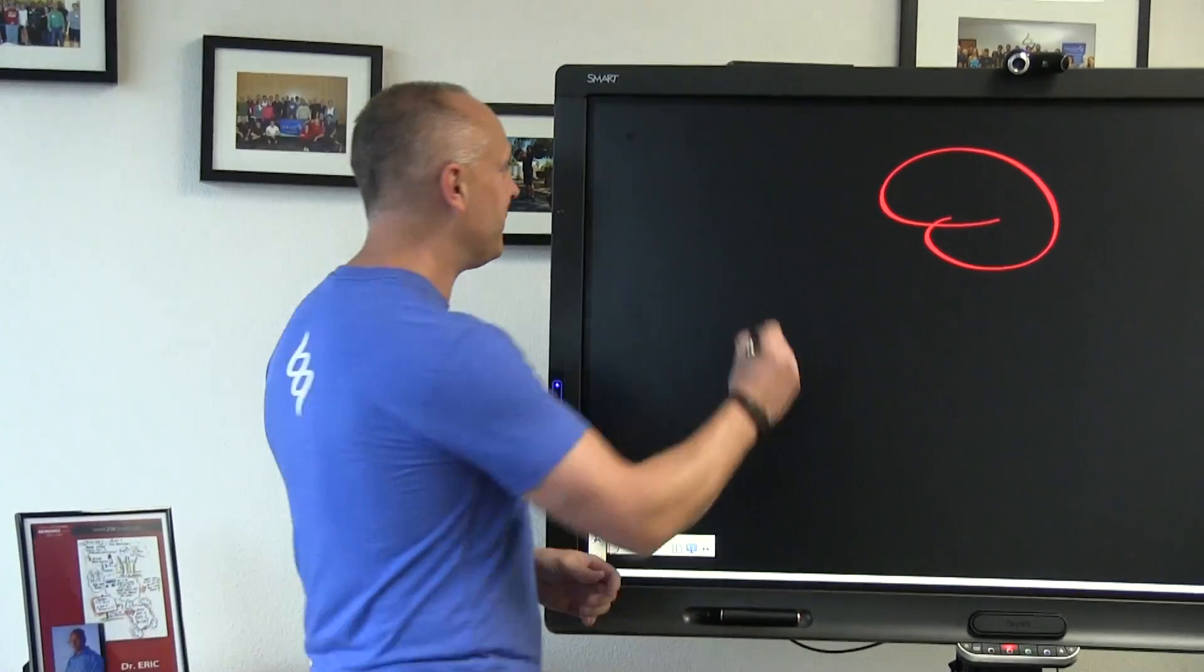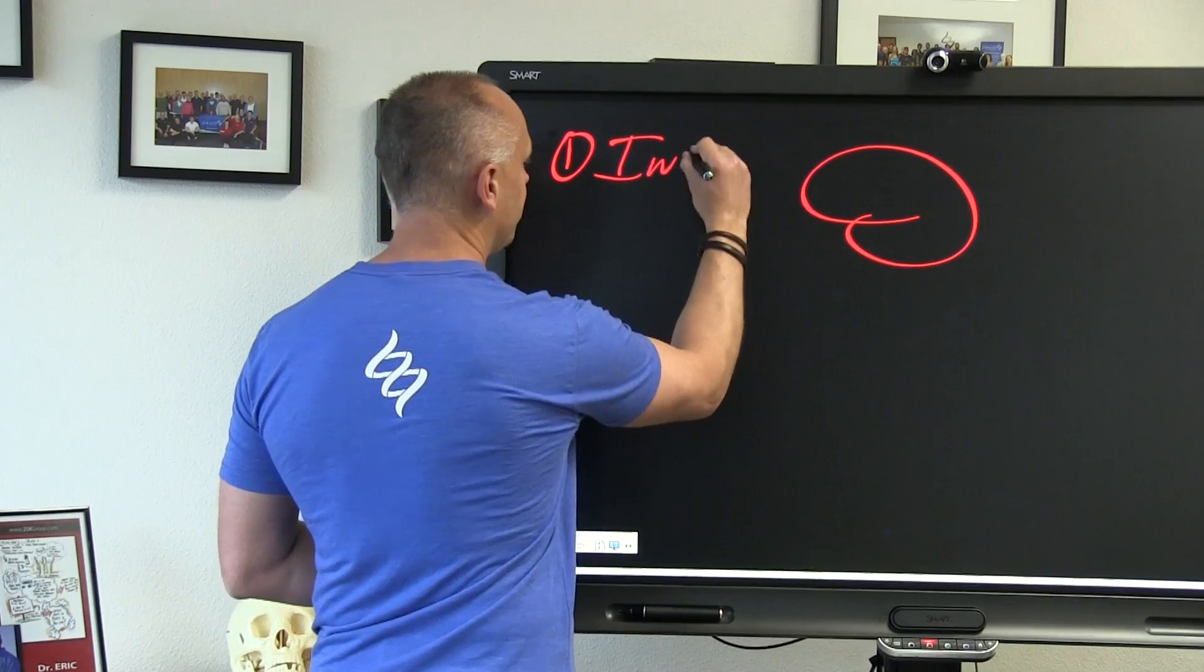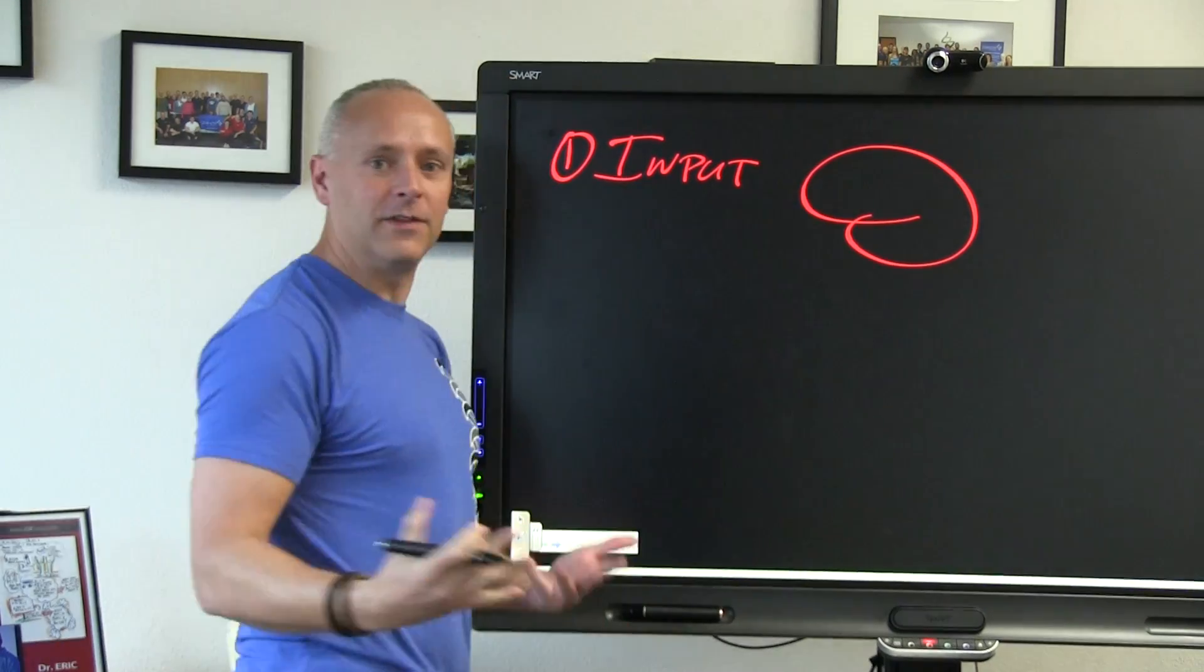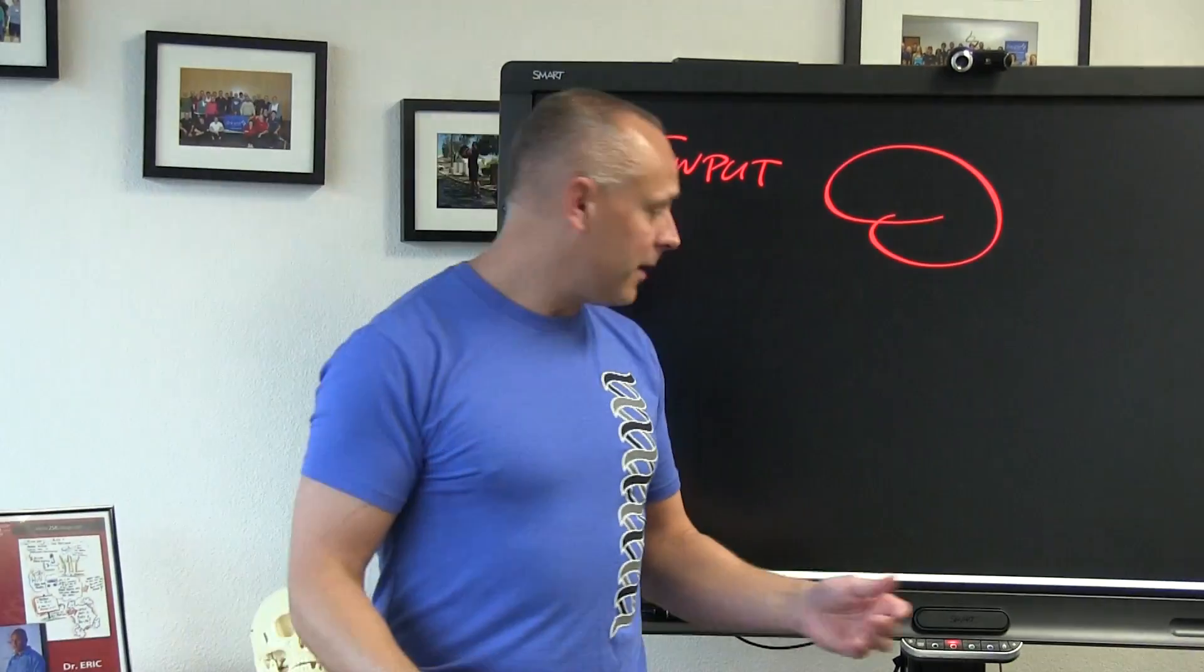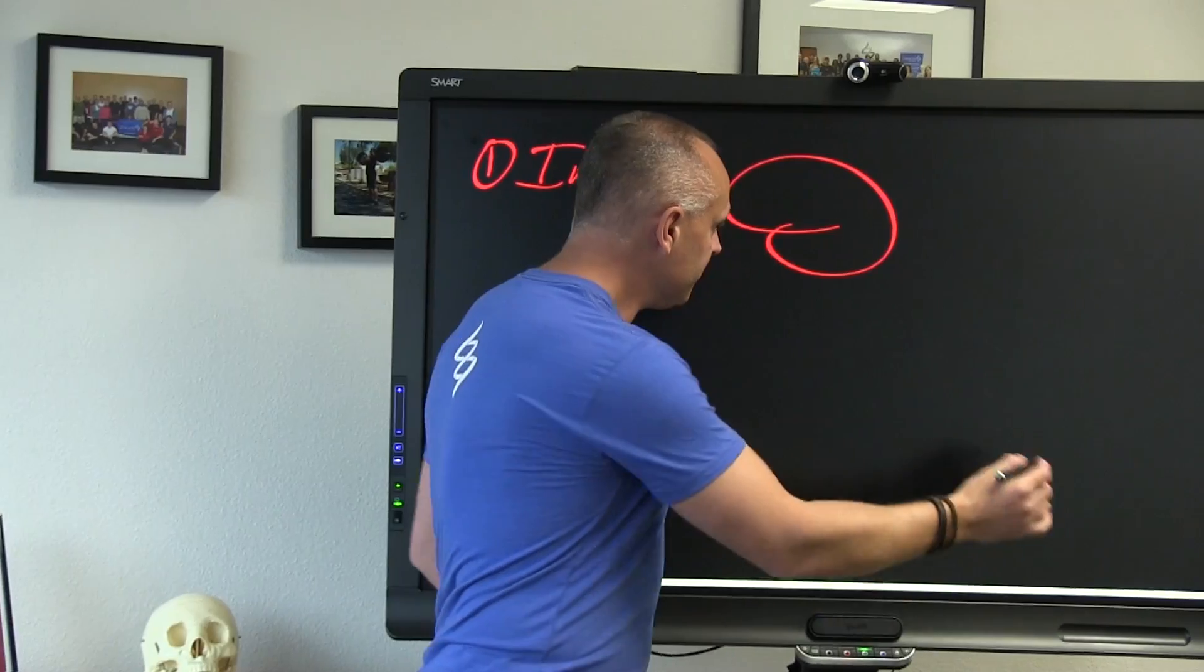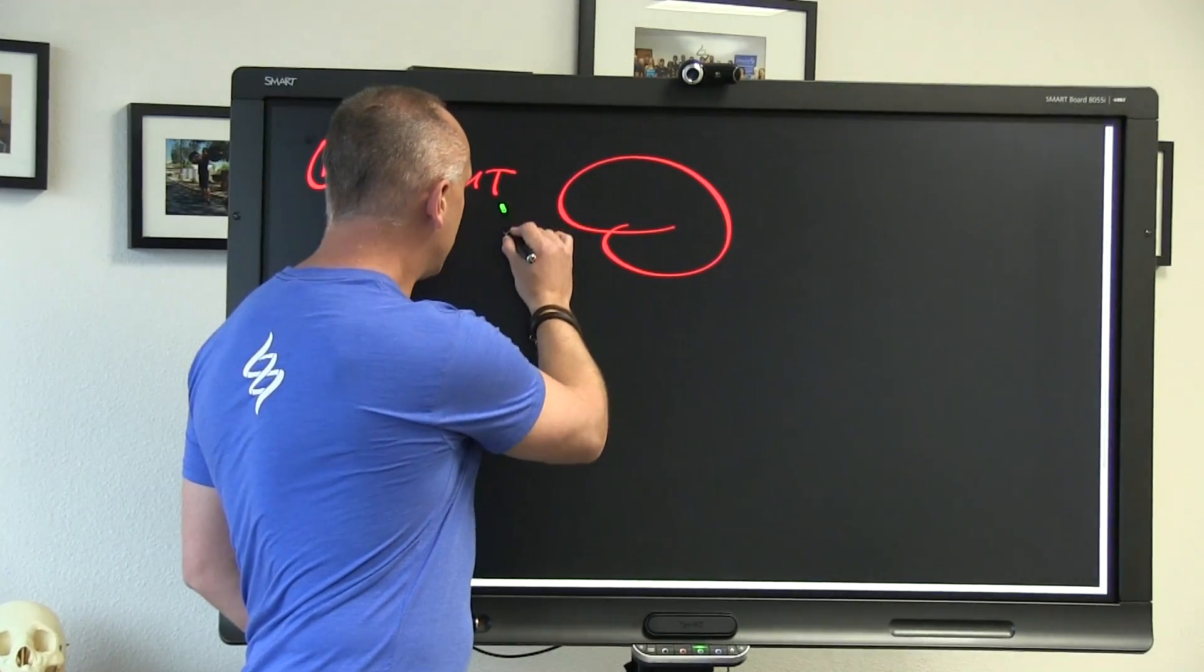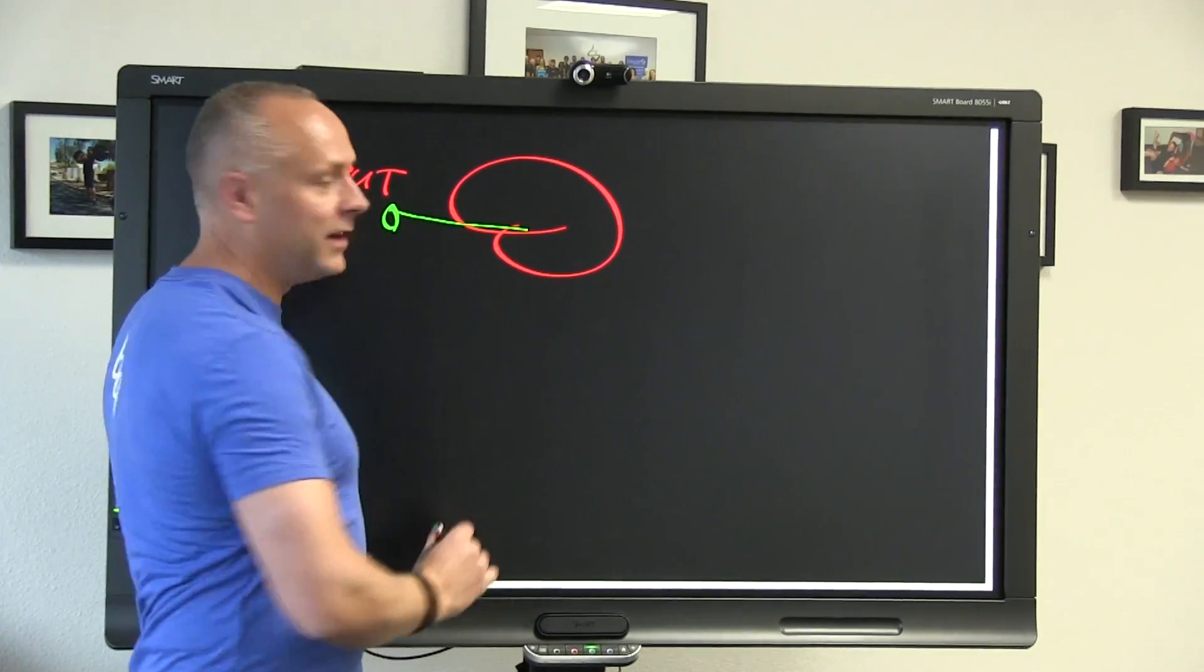Now, a brain basically has three primary tasks. This is what you want to write down. First of all, it has to receive input. It has to receive input. Basically what I mean by that, if we choose a different color, I have eyes and my eyes are sending input.